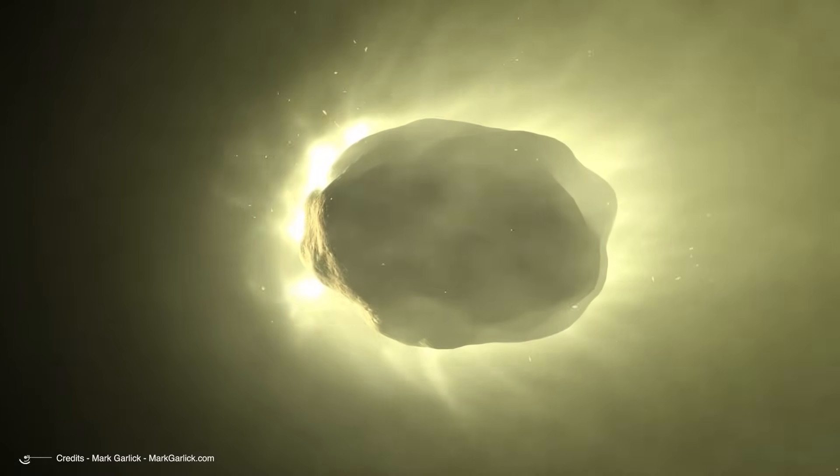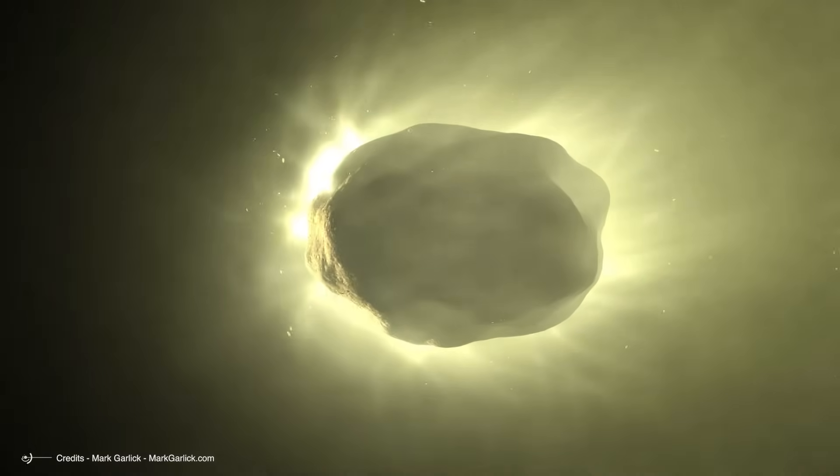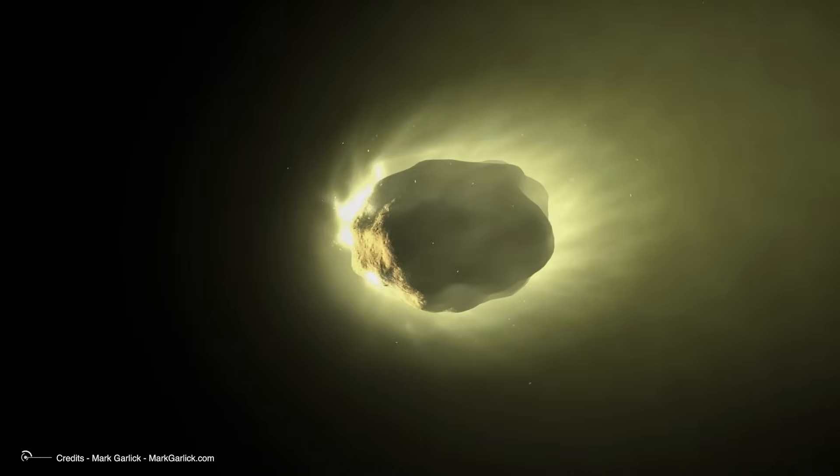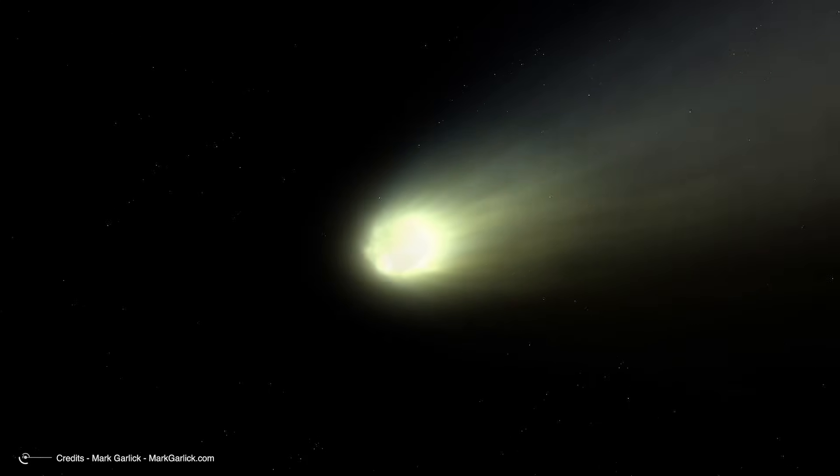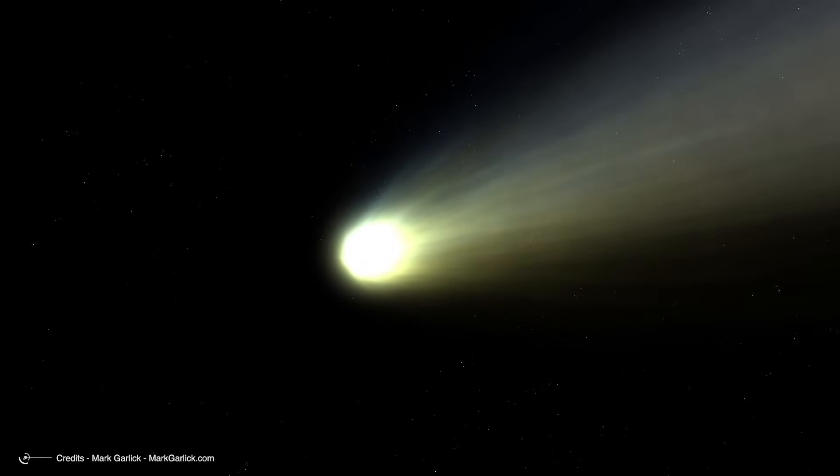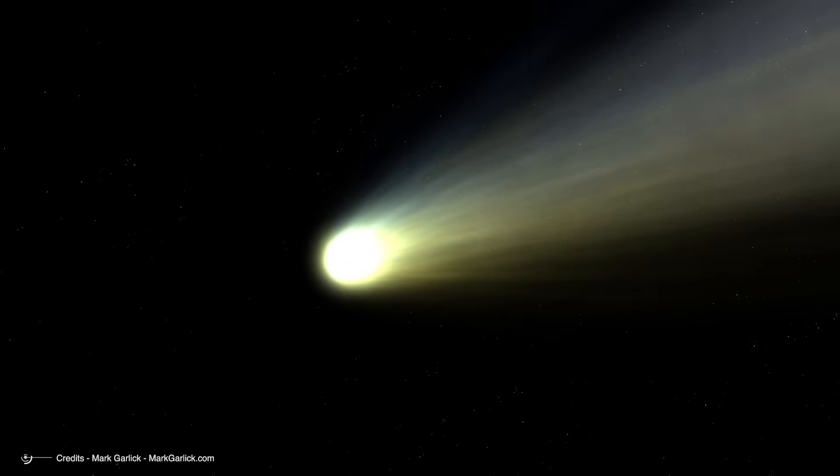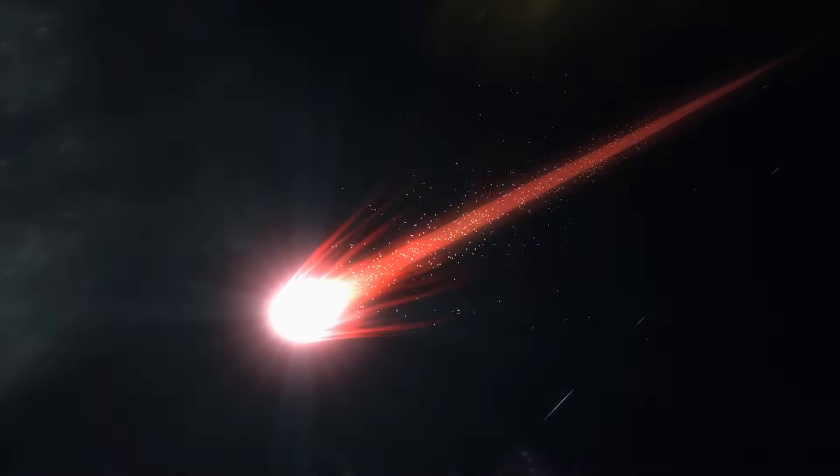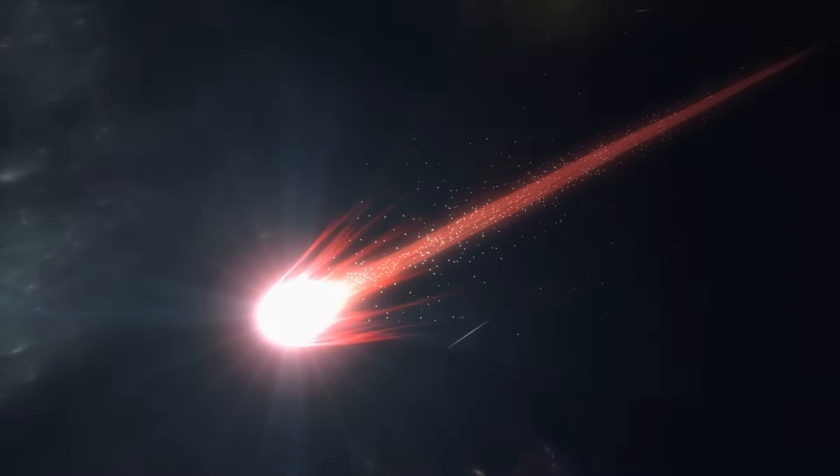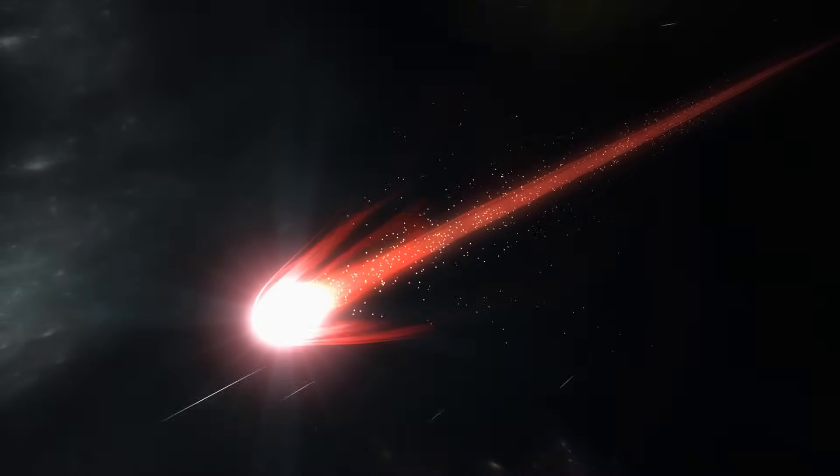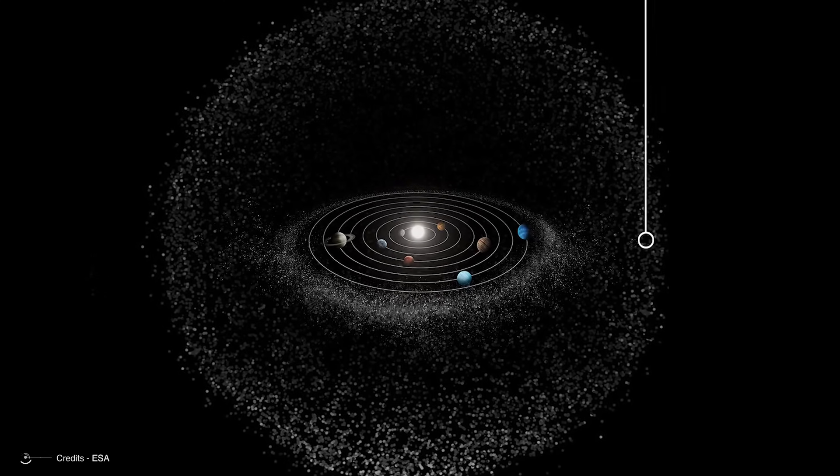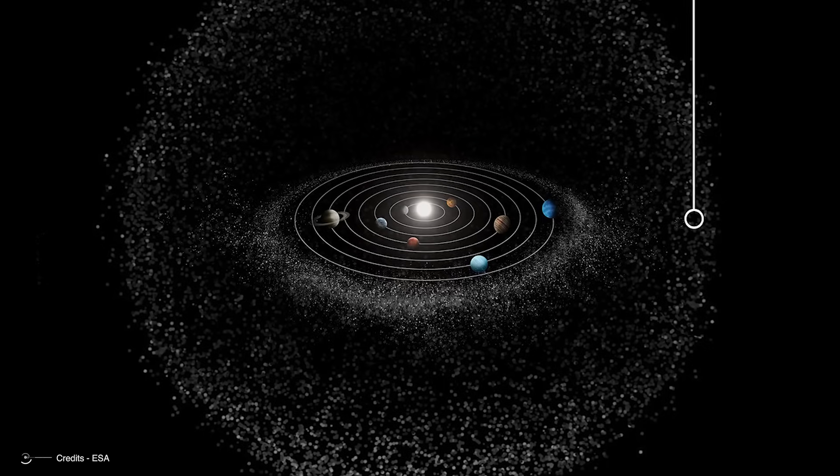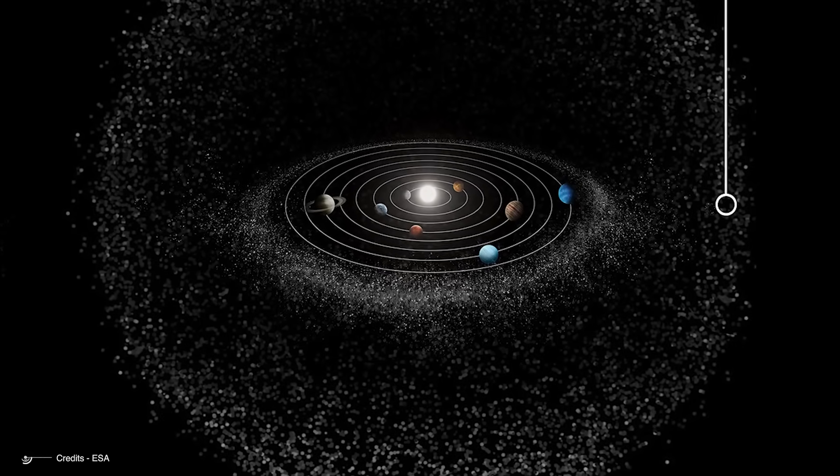The evidence for this enormous spherical cloud is hiding in plain sight. Long-period comets regularly arrive from all directions, not just along the ecliptic plane. These ancient messengers orbit the sun at every conceivable angle, some completely perpendicular to the planetary disk. Each one is living proof that our solar system extends far beyond and below the simplified diagram shown in textbooks. The Oort cloud contains trillions of icy bodies, far more objects than in the inner solar system, yet remains curiously absent from most educational materials.